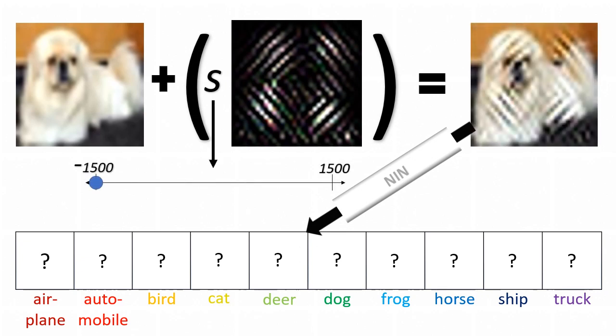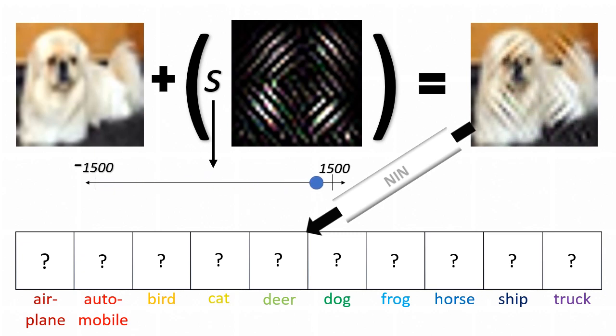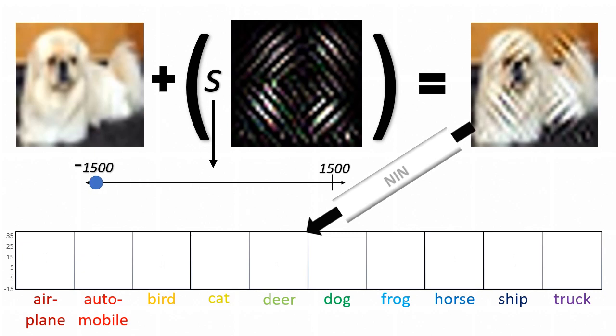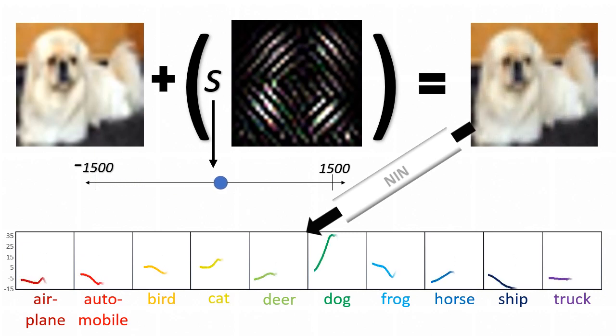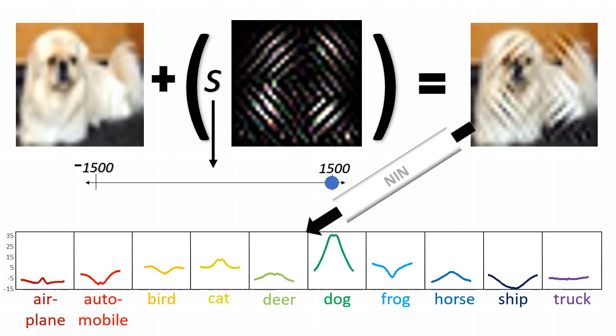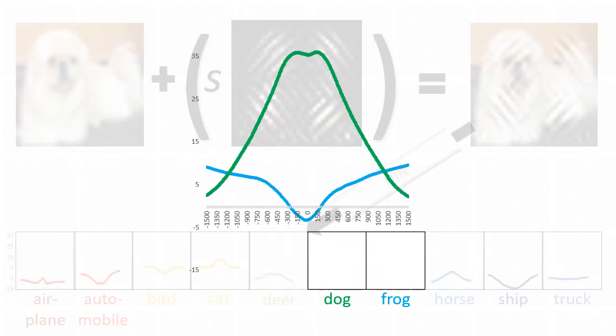Observe in the top right how the perturbed image changes as the perturbation scaling factor s varies over the chosen range. Now look at how the output class scores change as that scaling factor varies. The frog class score increases monotonically with the magnitude of the scale, surpassing all of the scores including the dog score. So the network thinks this is a frog.